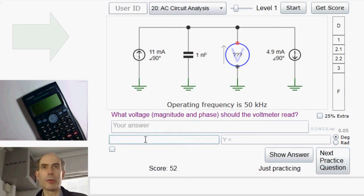Therefore, the current through that capacitor must be 11 milliamps at 90 degrees minus 4.9 milliamps at 90 degrees also. Net result, 0.0061, 6.1 milliamps at 90 degrees. In fact, no need to get a calculator to do that. I could have done that in my head.